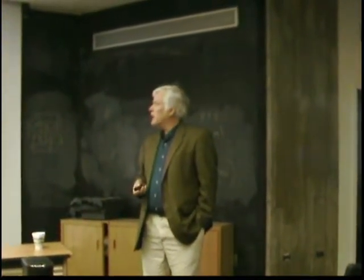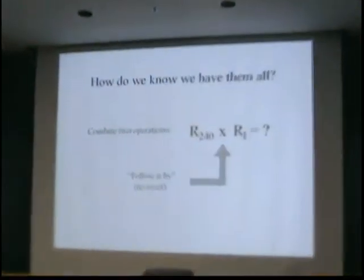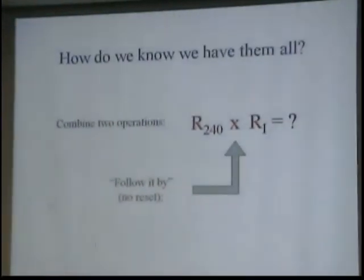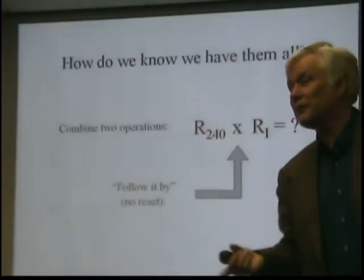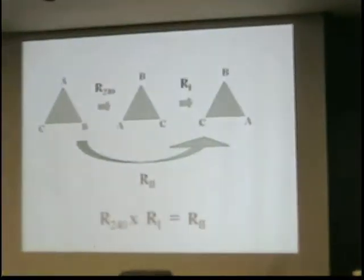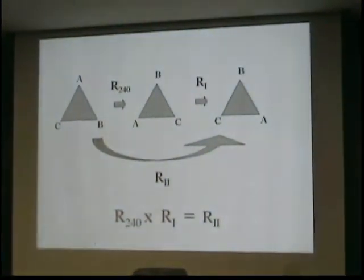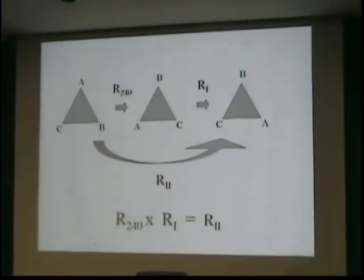And what he considered was combining operations. Very simple idea. What if I've done a rotation through 240, and I don't hit the reset button, keep the triangle where it is. And now I do a reflection on axis 1. What do I get? So we do our ABC rotation through 240. A goes all the way over to here, and so forth. Now, remember where axis 1 was. It cuts through B at this point.